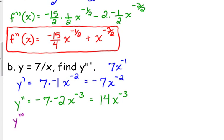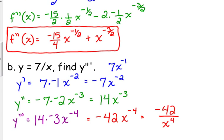Y triple prime, the third derivative, is 14 times negative 3 x to the negative 4, which simplifies to negative 42 x to the negative 4, or if you want to fix that negative exponent, since it started as a rational function, move the x to the negative 4 to the denominator to make it positive 4. That's the third derivative. Notice how the degree changes. For the rational function, we started with x to the first in the denominator. The third derivative ends up with x to the 4th, so it's counting up 1 every time because it's in the denominator.